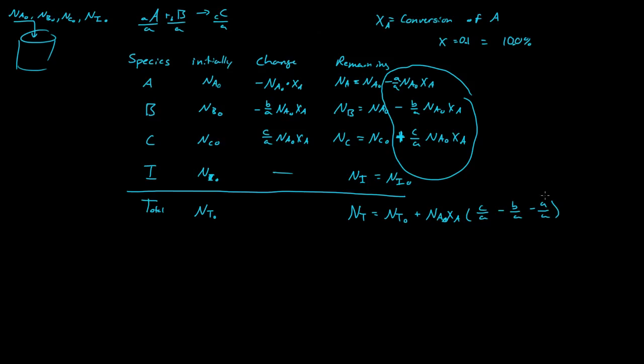And if we notice, A over A is just one, so that is just a minus one over A, or just minus one. And we call this delta.